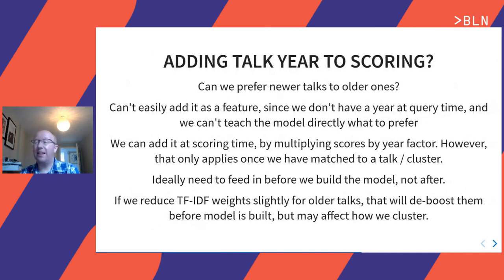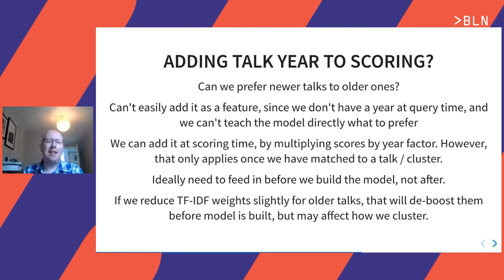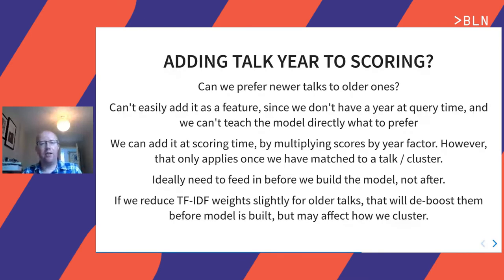Another thing to consider is adding the year to our scoring — can we prefer newer talks to older ones? A talk on Apache Tika from this year may be more relevant than one from five years ago. We can't easily add it as a feature because most people are not going to say 'show me talks from this year' — they'll just say 'help on Apache Tika'. We can add it at scoring time, but we need to be careful not to push it into a different cluster.